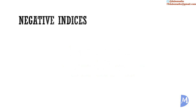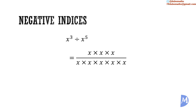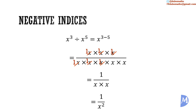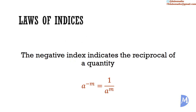To understand what a negative index means, we use division. Consider x to the 3rd power divided by x to the 5th power — x being multiplied 3 times divided by x being multiplied 5 times. Cancelling, we get 1 over x multiplied by x, which is 1 over x squared. But from the division rule, x to the 3rd divided by x to the 5th equals x to the 3 minus 5 power, which is x to the negative 2 power. So x to the negative 2 power is the same as 1 over x squared. In general, a to the negative mth power is the same as 1 over a to the mth power — the negative index indicates the reciprocal of a quantity.